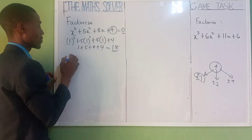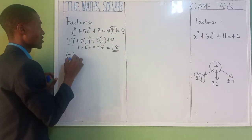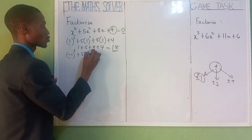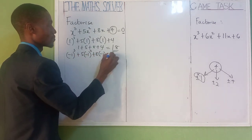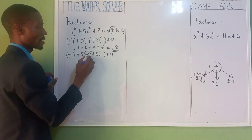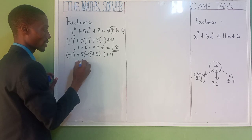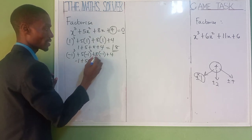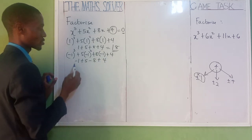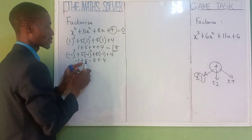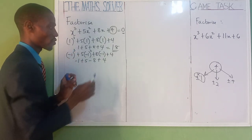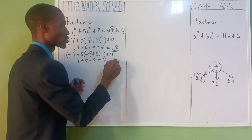Let's use minus 1. We put minus 1 here: minus 1 raised to the power of 3, plus 5 into bracket minus 1 raised to the power of 2, plus 8 into bracket minus 1, plus 4. Minus 1 cubed is minus 1. Minus 1 squared is 1, so that gives plus 5. Minus 1 times 8 is minus 8. So: minus 1 plus 5 is 4, minus 8 is minus 4, plus 4 equals 0.